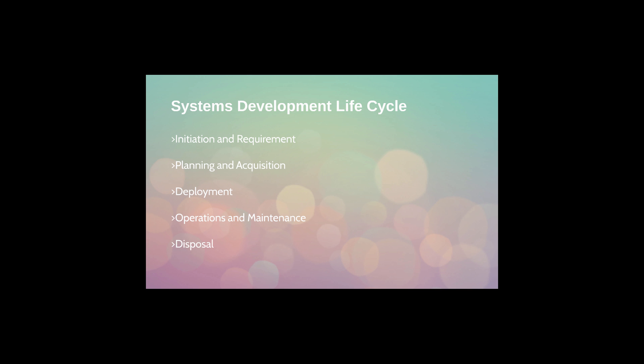For the video today, we'll look at the stages involved with the development of a system lifecycle. These stages include the initiation and requirement stage, the planning and acquisition stage, the actual deployment stage, followed by system operations along with its maintenance, and finally the disposal stage. Let's begin with examples of each.